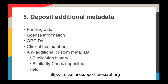Those four steps will get your Crossmark box and button up and running and providing status information. Then you can add all kinds of additional metadata. If you're depositing funding data, license information, or ORCIDs, all of that will be pulled from your existing deposits and displayed in the Crossmark box. You can also add clinical trial numbers - which I'll talk about in a moment - and any custom metadata you want to display to the reader.